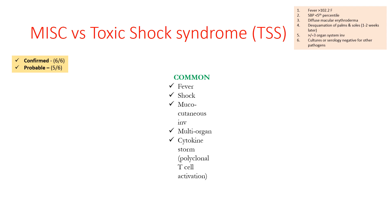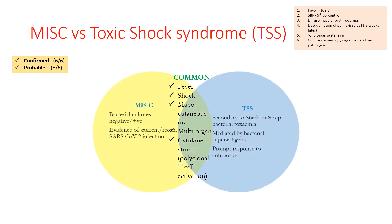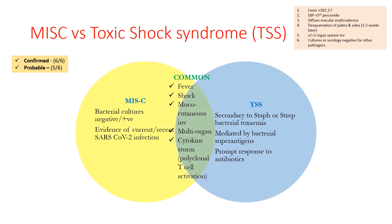In TSS, the cytokine storm occurs because of activation by bacterial superantigens like TSST-1. To differentiate: MIS-C will have negative cultures for staph or strep (unless there is a super-added infection) and definite evidence of current or recent SARS-CoV-2 infection. TSS is definitively secondary to staph or strep bacterial toxemia, mediated by bacterial superantigens, and shows very prompt response to antibiotics. MIS-C requires management with anti-inflammatory therapy like steroids, which can actually flare up TSS.